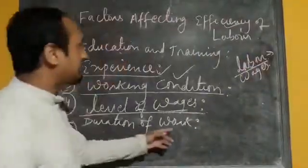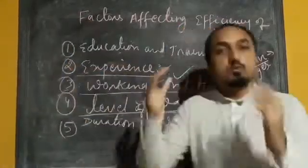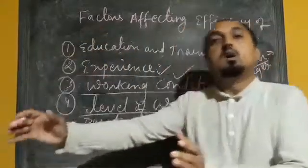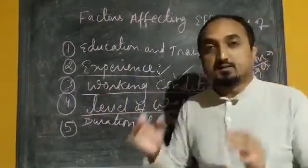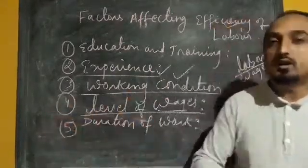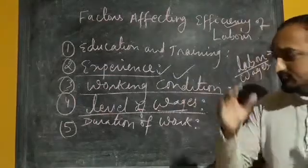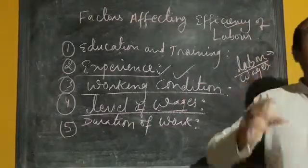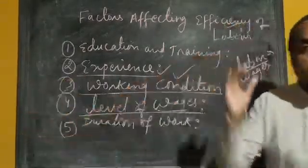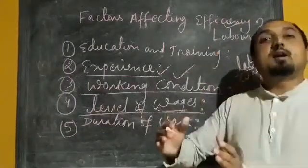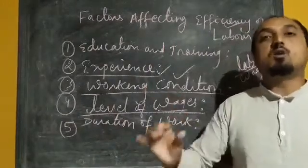The next point is duration of work. Duration of work is also one of the important factors affecting efficiency of labour. If workers are asked to work for longer hours, their efficiency will decrease — they get tired and because of that tiredness, efficiency degrades. That's why the working hour has been reduced to 8 hours. The maximum time period to work is 8 hours, as decided by the government so that labour will not get tired. To maintain constant efficiency, we should provide limited working hours — 8 hours is set as the standard working hour for workers.